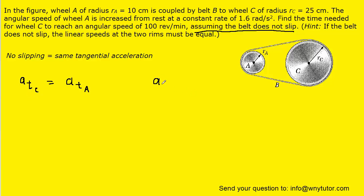We recall that tangential acceleration is equal to the radius of the wheel multiplied by its angular acceleration. So we're going to make a substitution for both sides of this equation. Notice of course we're using subscripts for wheel C and subscripts for wheel A. What we can do is rearrange this equation and solve it for the angular acceleration of wheel C.